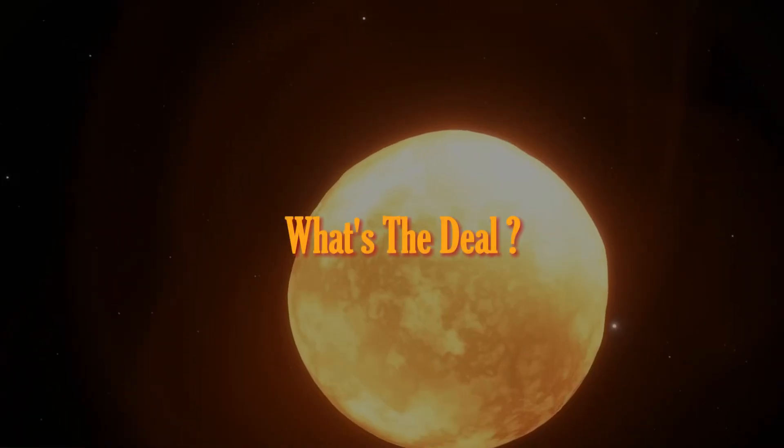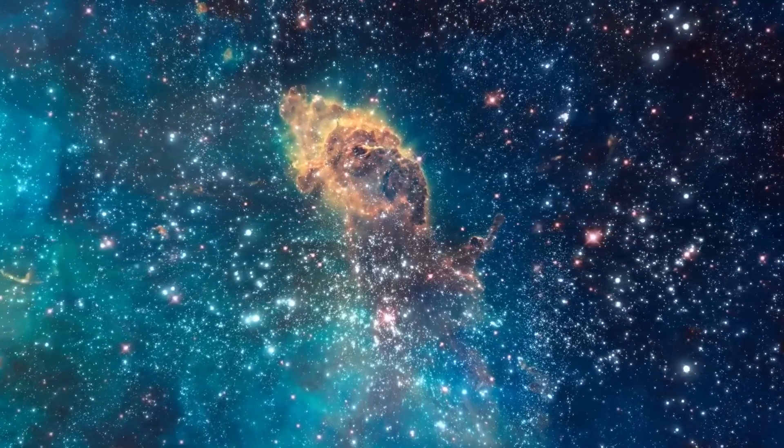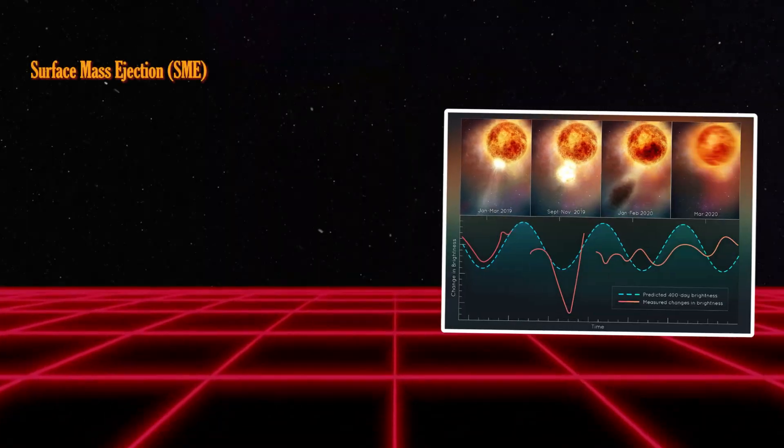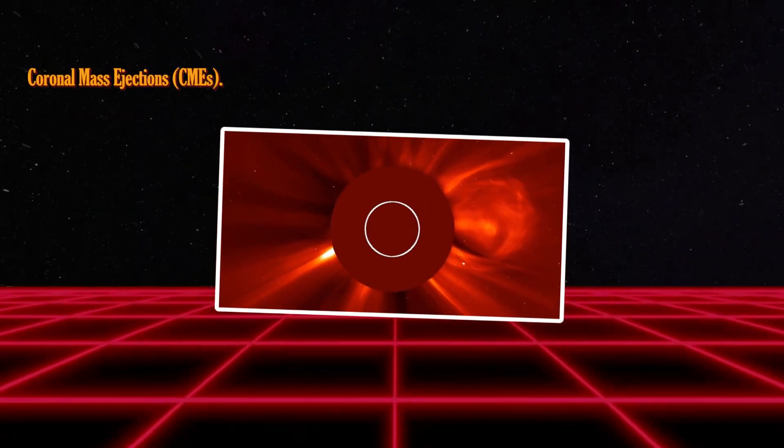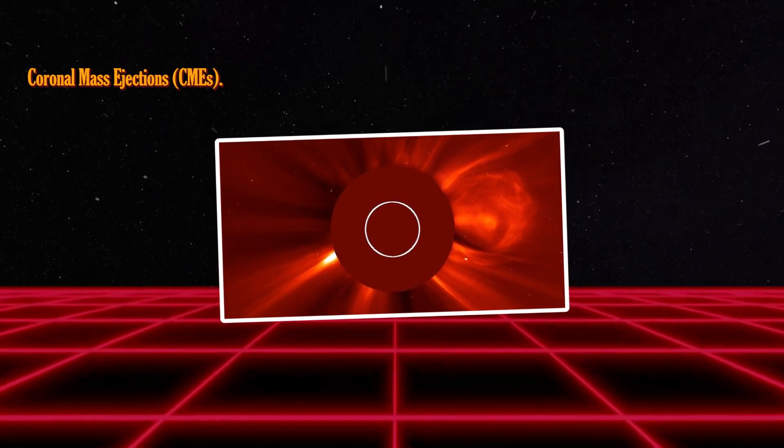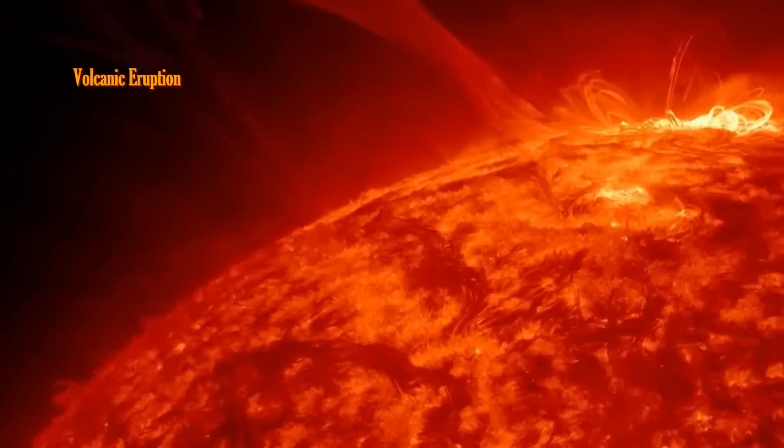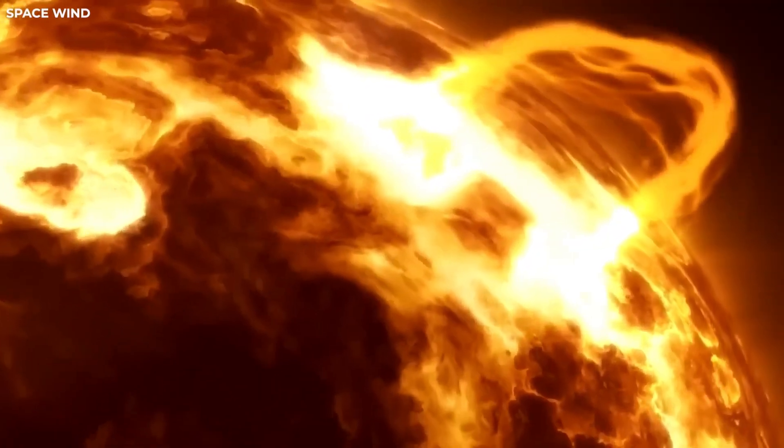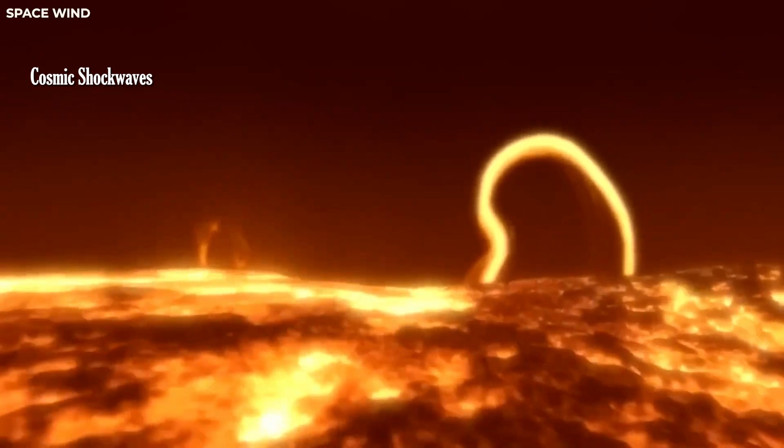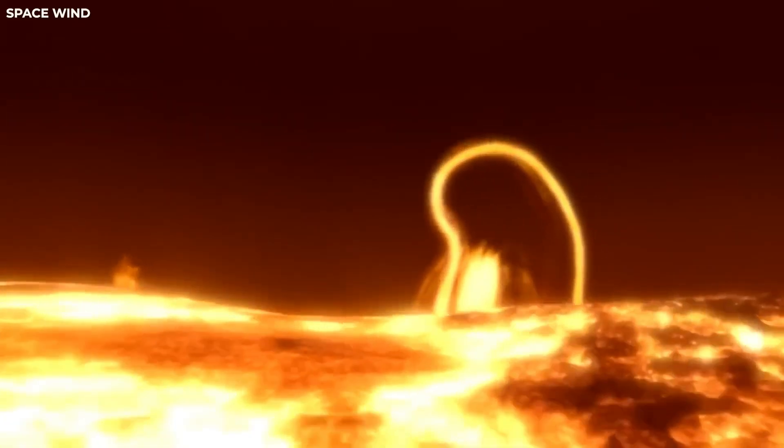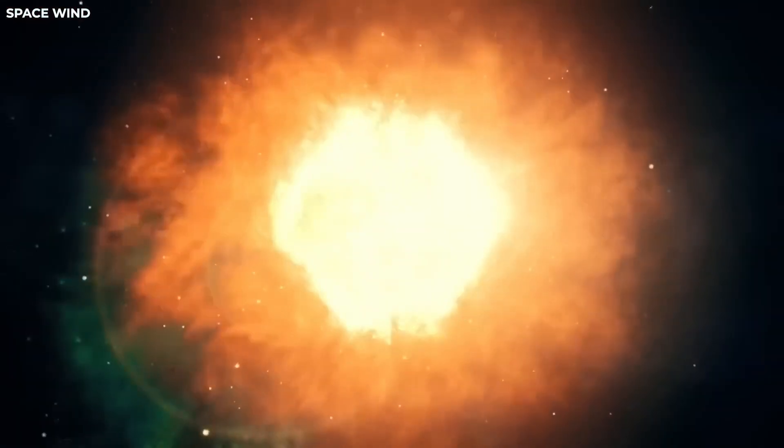What's the deal, you ask? Betelgeuse threw a cosmic party, unleashing a surface mass ejection, SME, akin to the sun's coronal mass ejections, CMEs. It's like a star-sized volcanic eruption, sending material spiraling out, creating cosmic shockwaves, and dimming the celestial lights. Mystery solved, right?